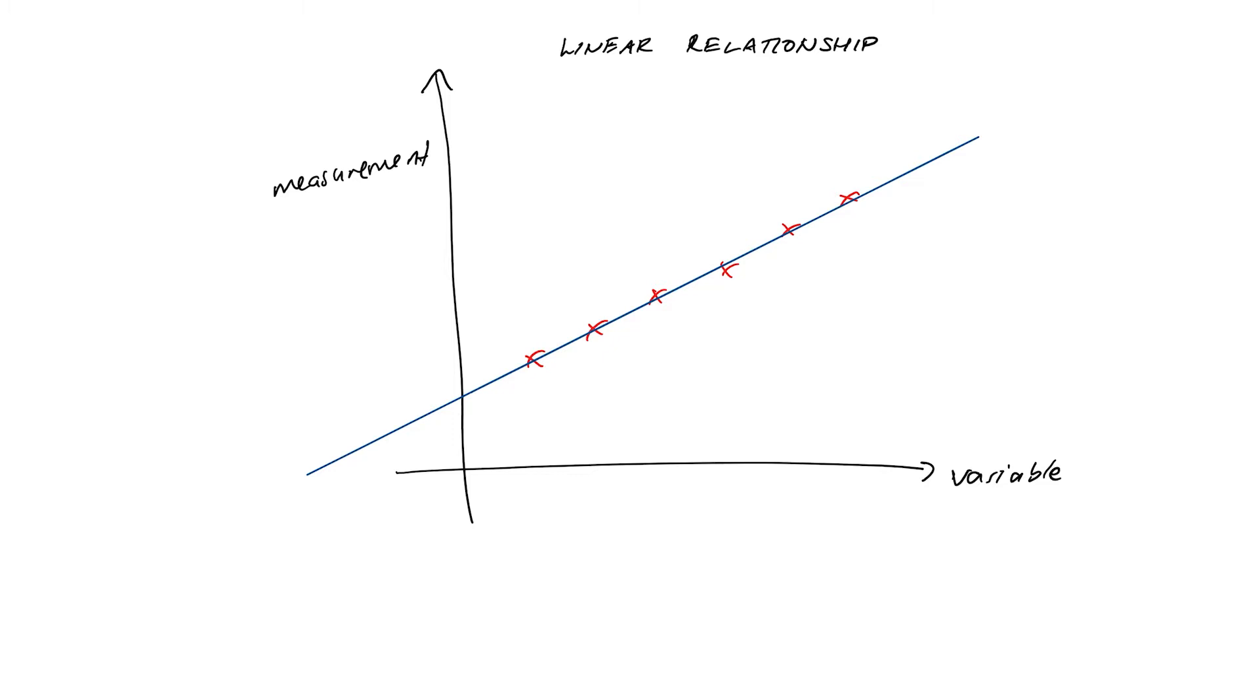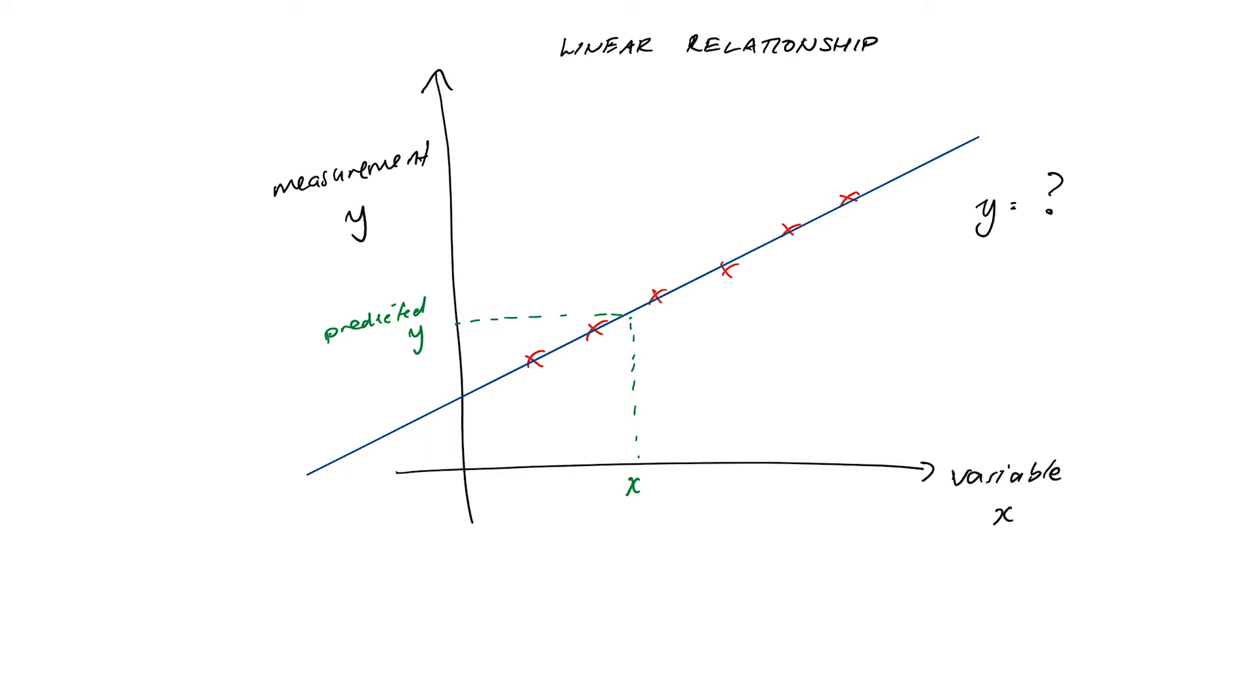So we could pick up our ruler and draw our best guess of a straight line through these points. And then if we could figure out an equation for this line, then that would mean we could estimate our variable, maybe that temperature, at data points times other than the ones we measured at. So what we're going to do in this video is we're going to figure out how to calculate equations for straight lines, how to draw graphs of them, and we're going to talk a bit about some properties.